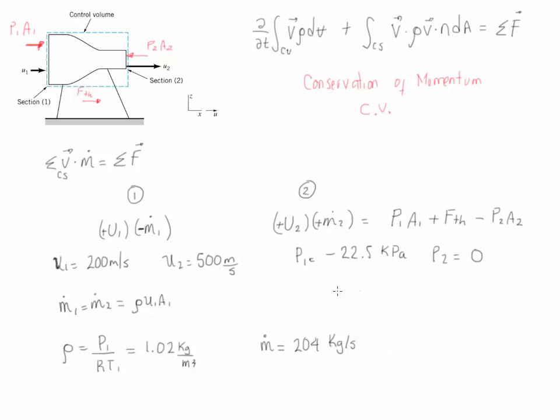Substituting all these values into the main equation we could find out that the anchoring force is going to be equal to 83,700 newtons and this is the amount of force that is designed for the thrust stand to be able to hold this jet engine.